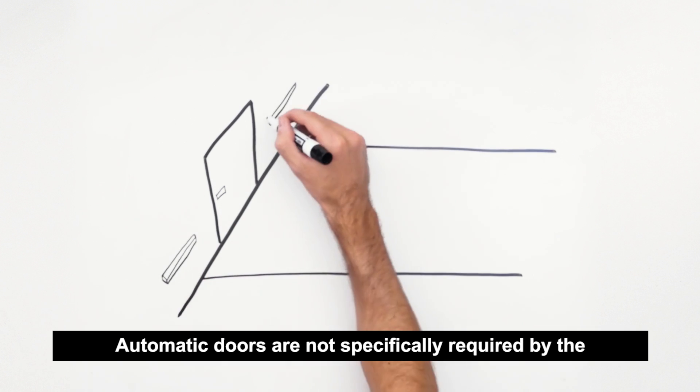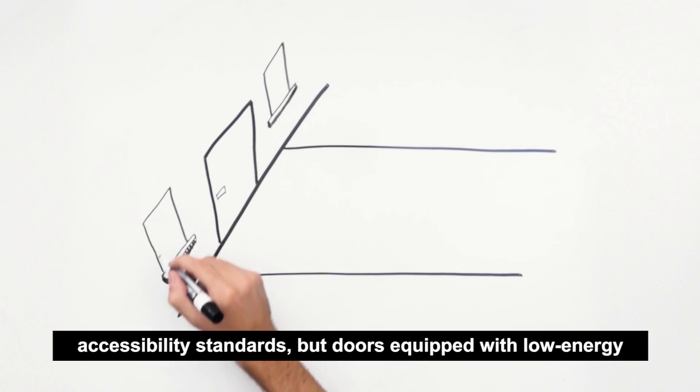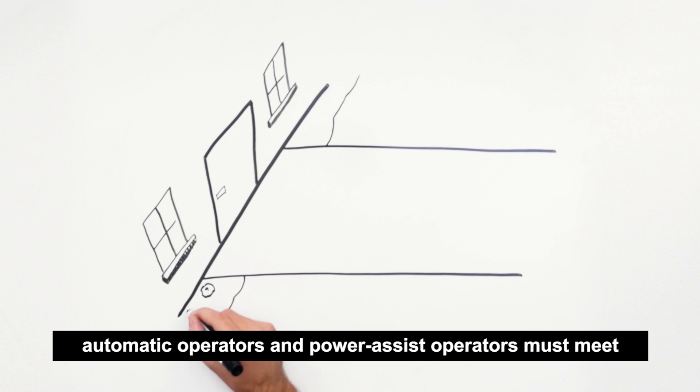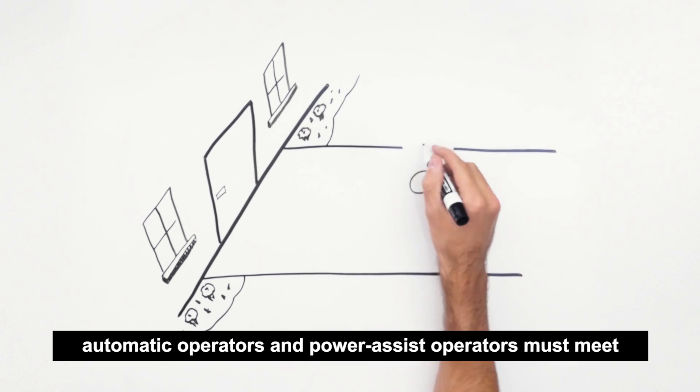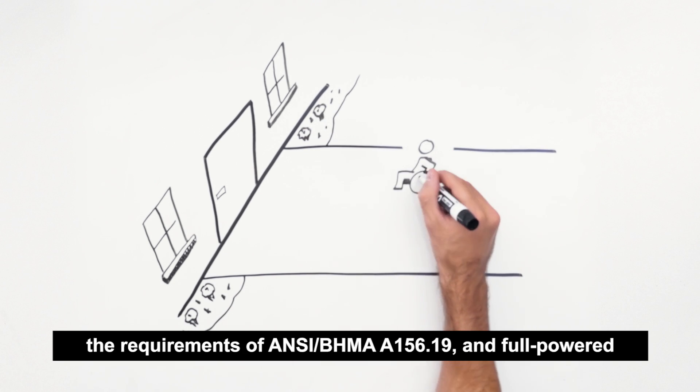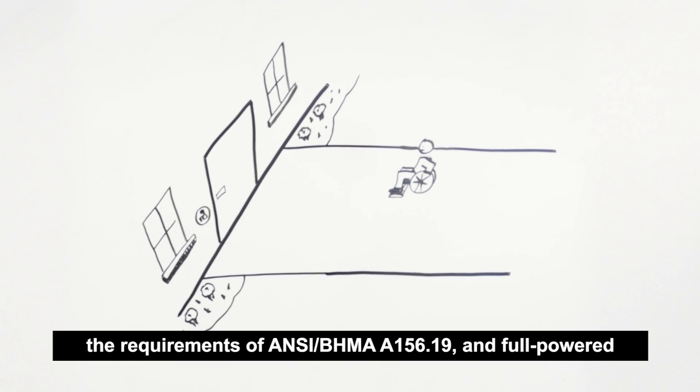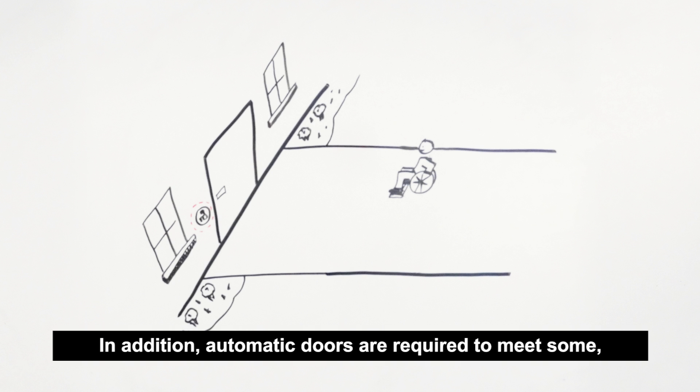Automatic doors are not specifically required by the accessibility standards, but doors equipped with low energy automatic operators and power assist operators must meet the requirements of ANSI BHMA A156.19, and full powered operators must meet the requirements of ANSI BHMA A156.10. In addition, automatic doors are required to meet some, but not all, of the requirements for manual doors.